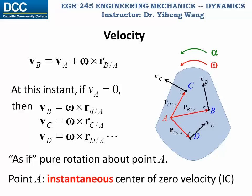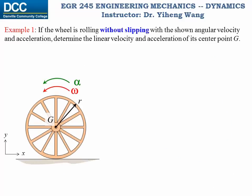Sometimes the instantaneous center of zero velocity can be determined simply through observation. For example, in this problem, if the wheel is rolling without slipping and has a given angular velocity omega and angular acceleration alpha, we need to determine the linear velocity and linear acceleration of its center point G. Since this wheel is rolling without slipping, where it is in contact with the ground it should have the same velocity as the ground, which is zero. Therefore this contact point is our instantaneous center of zero velocity.